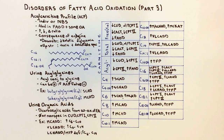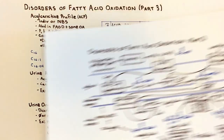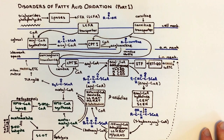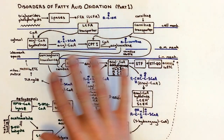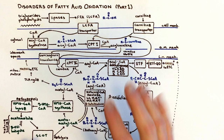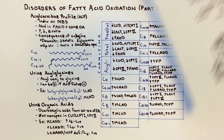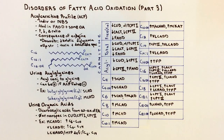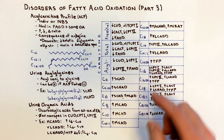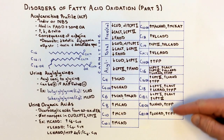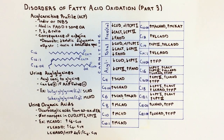By working through the pathway rather than just memorizing a chart, you can reason through what a defect in any one of these enzymes would produce. Now that you know this, should you encounter an acylcarnitine profile, you know how to interpret it. And if you need a little help, this chart will serve as your cheat sheet to determine which fatty acid oxidation disorder is most likely present.